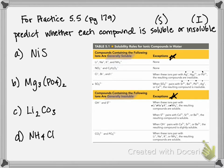If sulfide is paired with calcium, strontium, or barium, those compounds are soluble. If hydroxide is paired with calcium, strontium, or barium, those are slightly soluble.